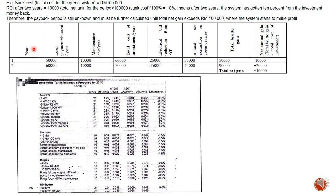Let's see this example in detail. In year one, you have to first calculate all cost of investment — whatever money you give away. For example, you use your money to pay the loan and its interest for the first year, say 50,000, and the maintenance cost for that year is 10,000. You add these up to know your total cost of investment for that year: 50,000 plus 10,000 equals 60,000. Next, you calculate your total bruto gain.